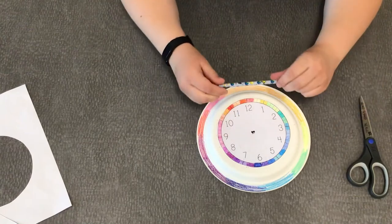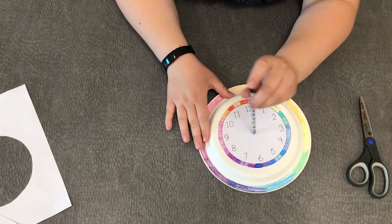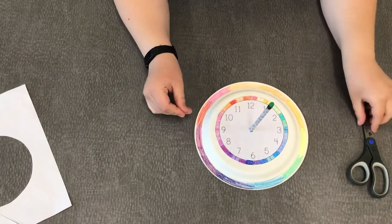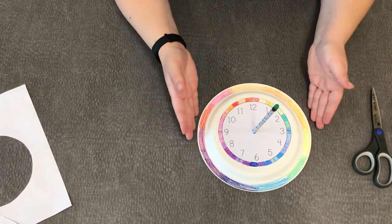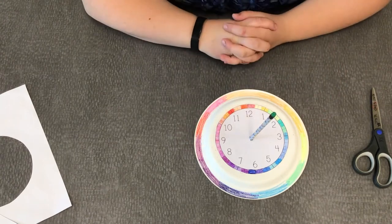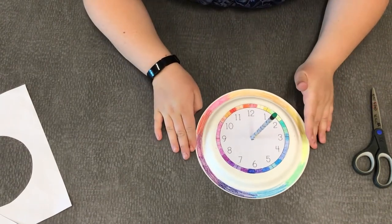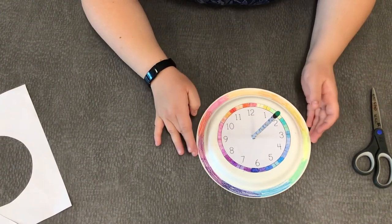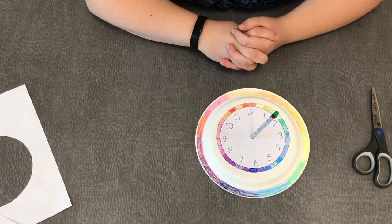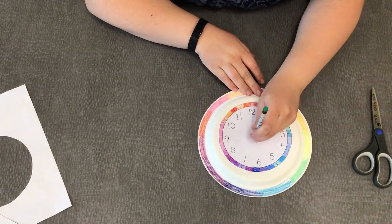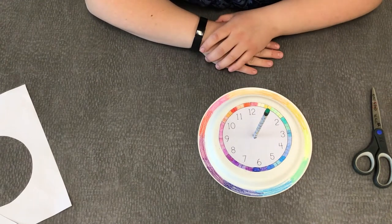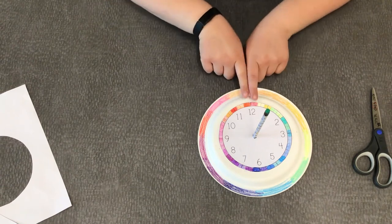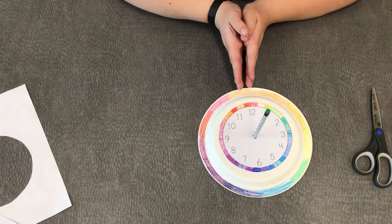Now today is a cloudy day so I am not able to show you this, but what you're going to do is you're going to take your sundial outside and using a compass or a smartphone you can find out which direction is north and you are going to place your sundial in direct sunlight and find north and face the number 12 towards wherever north is.